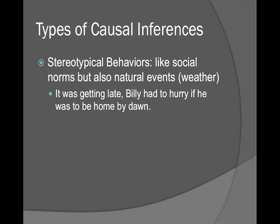Stereotypical behaviors are like social norms but also stereotypical natural events. For example: 'It was getting late. Billy had to hurry home if he was going to be home by dawn.' When you get to the word 'dawn,' people stare at it because 'getting late' implies dark — getting late does not mean morning. There's a stereotypical way things are supposed to happen.